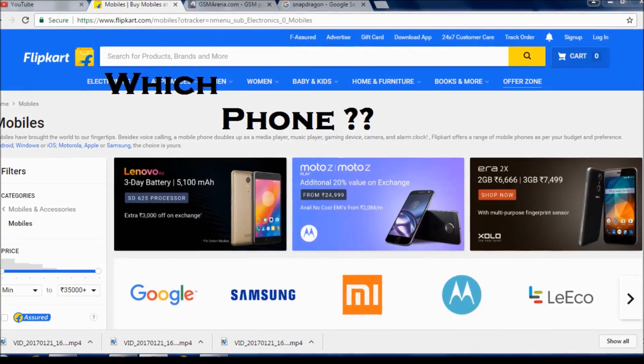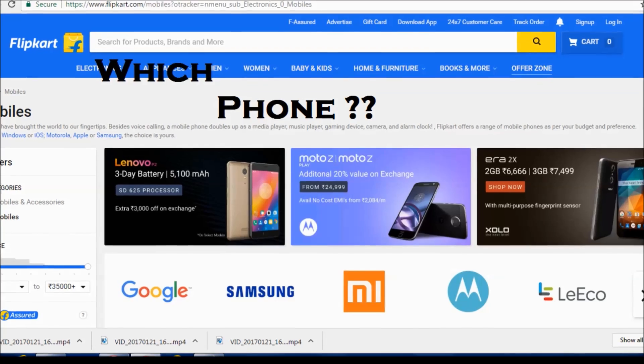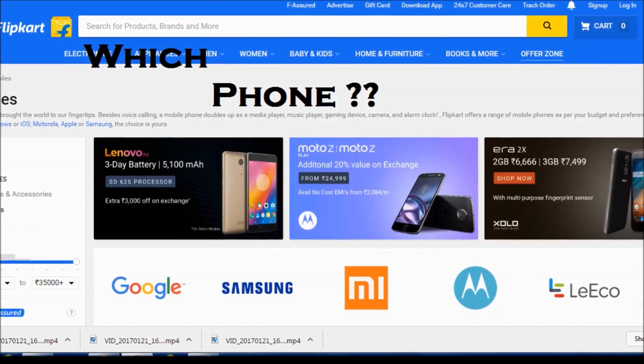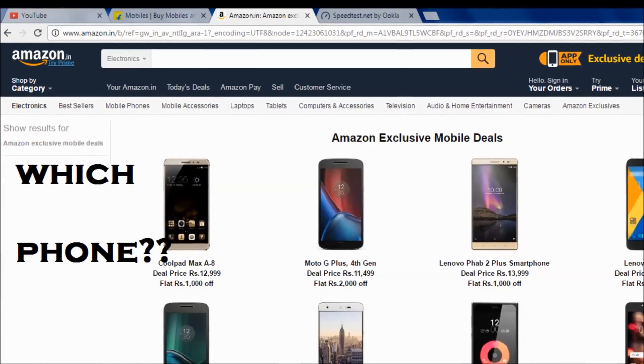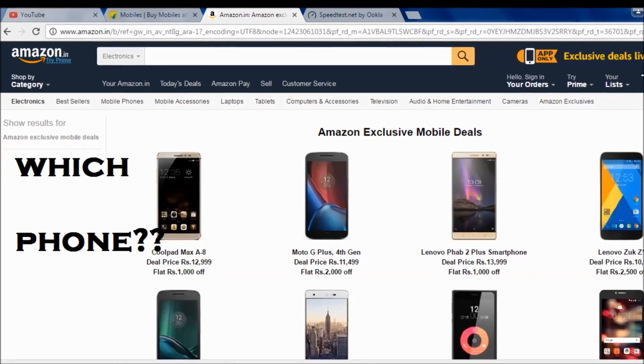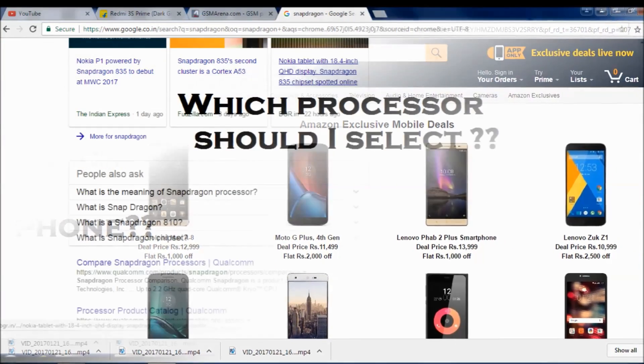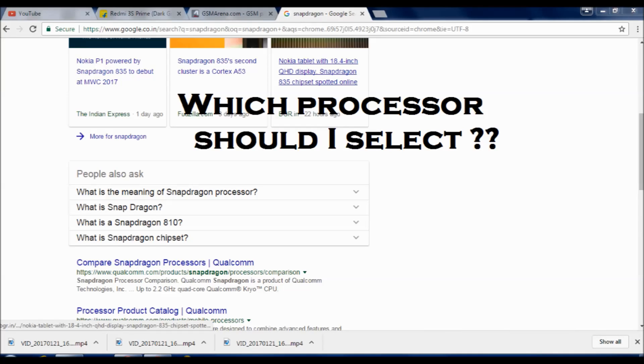Hello friends, so are you thinking to buy a new phone and are you looking for specifications on the Internet? You might have seen that many sites show this phone has Snapdragon 650 and this one has Snapdragon 625.